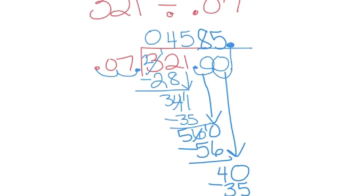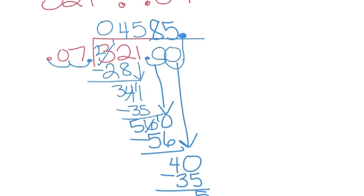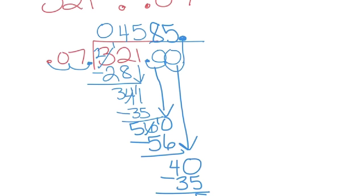We have told you that we are not allowed to have remainders anymore. So, what should we do? We cannot just leave the 5 hanging out there. We have to add another 0 and bring it down. 7 goes into 50. 7 goes into 50 how many times?